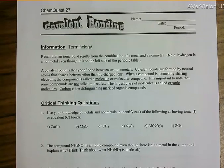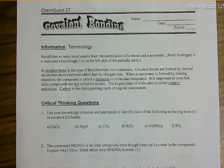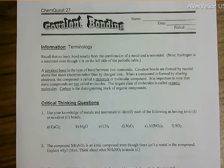Good morning chemistry students. This is your Kevquest 27 covalent bonding teaching video. Some terminology: an ionic bond results from the combination of a metal and a nonmetal. Note that hydrogen is a nonmetal even though it is on the left side of the periodic table. A covalent bond is the type of bond between two nonmetals; covalent bonds are formed by neutral atoms that share electrons.